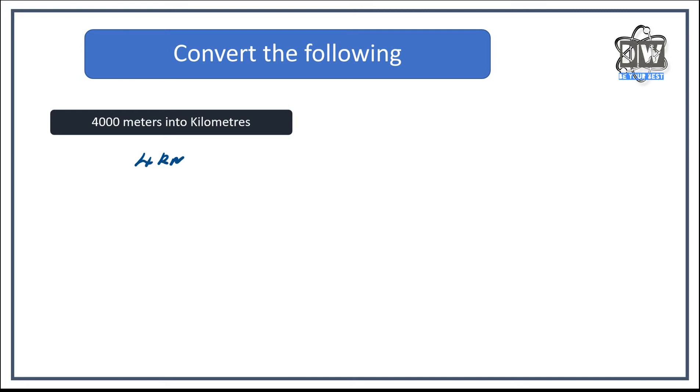Hopefully you've done that. It's four kilometers. Because for every a thousand meters will equal one kilometer. So what did we do? We divided by a thousand to give us our four kilometers.